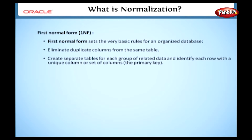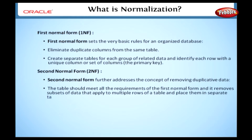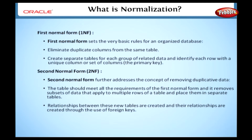Now let's discuss the second normal form, 2NF. The second normal form further addresses the concept of removing duplicate data. The table should meet all the requirements of the first normal form, and it removes subsets of data that apply to multiple rows of a table and places them in separate tables. Finally, the relationships between these new tables are created through the use of foreign keys.